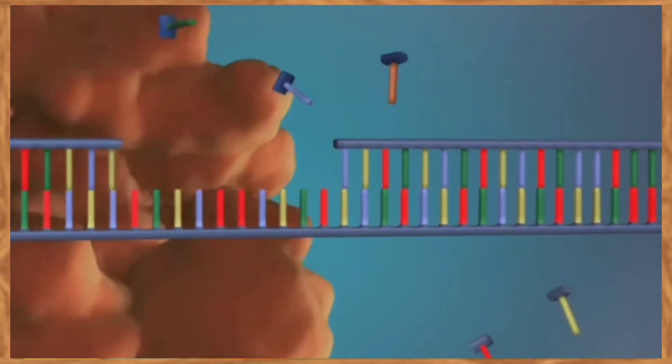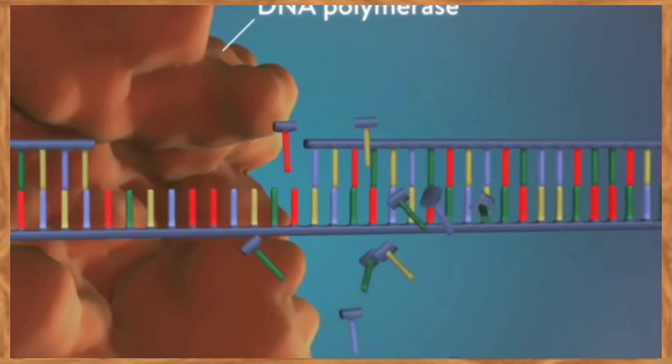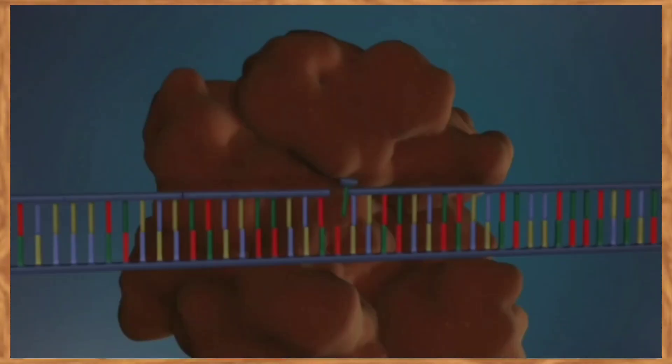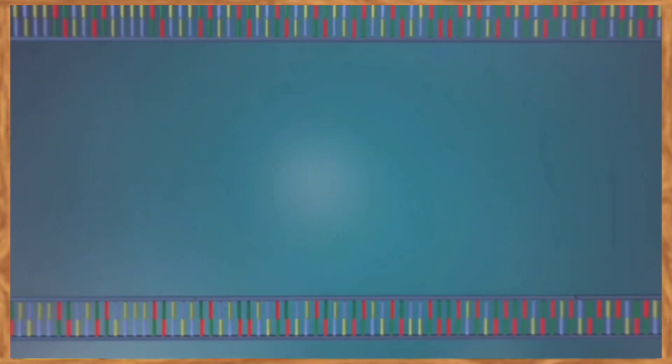DNA replication is described as semi-conservative because each DNA molecule is made up of one old conserved strand of DNA and one new one.